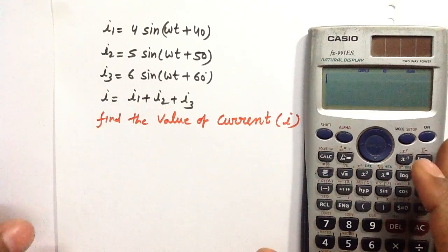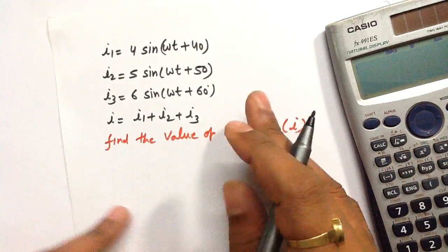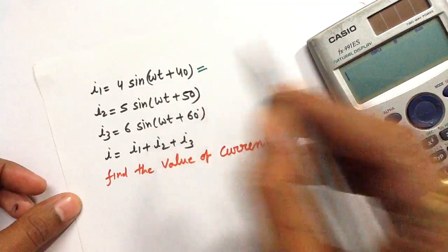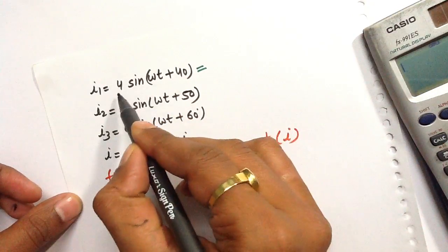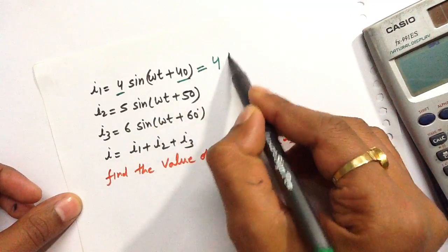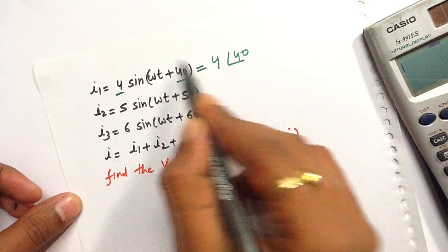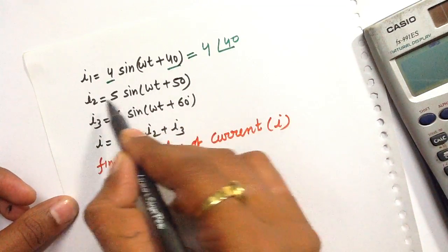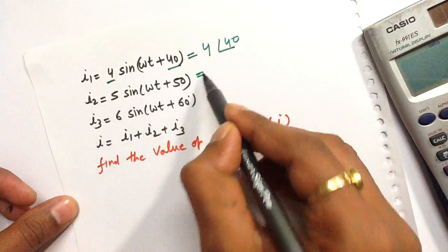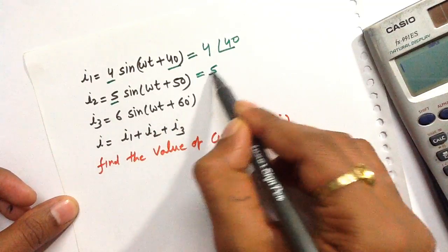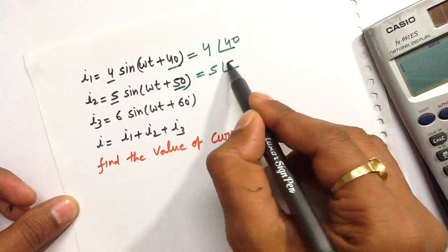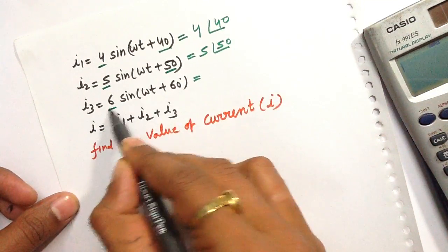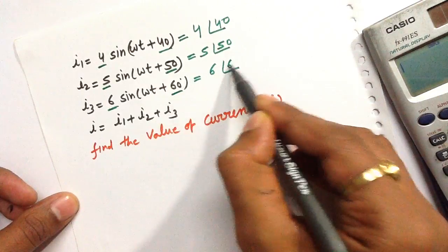Before using the calculator, write all these values in polar form. Current i1 has a peak value of 4 and angle of 40, written as 4∠40. Similarly, current i2 is 5∠50, and current i3 is 6∠60.